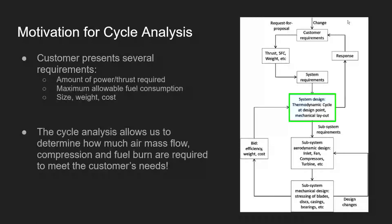The reason we conduct the cycle analysis is to get from customer requirements to our most important engineering quantities. Typically a customer or market analysis will present requirements for a gas turbine: the amount of power or thrust required, the maximum allowable fuel consumption, and the size, weight, and cost constraints. From these, we determine how much air mass flow, compression, and fuel burn or temperature are needed to meet the customer's needs.